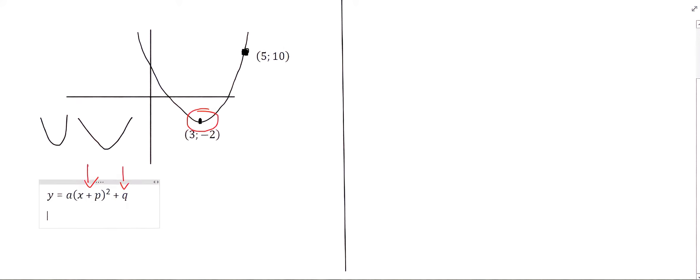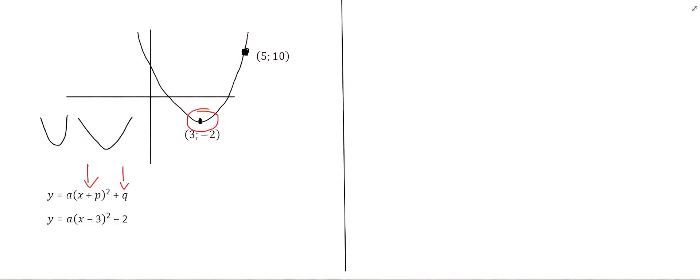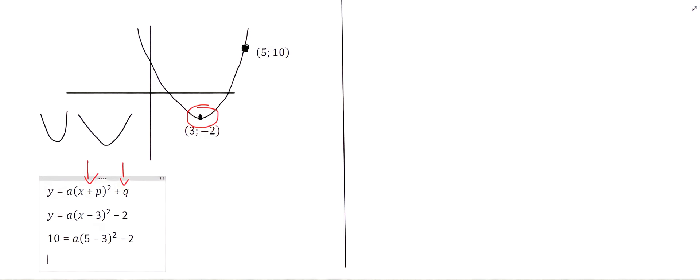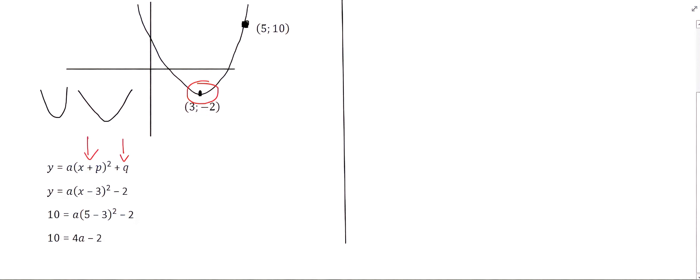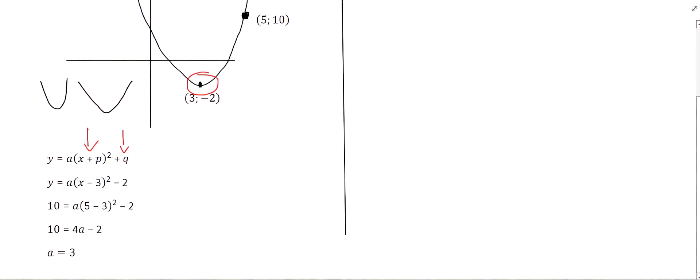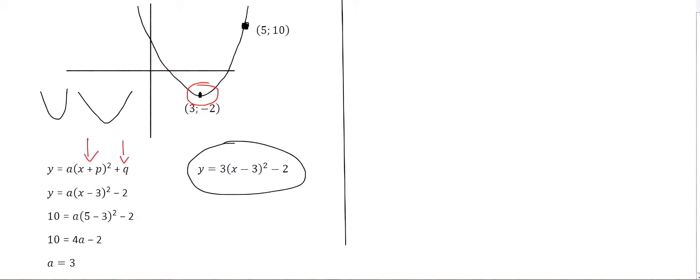We can now find 'a' by substituting any other value visible on the graph. Note that you can't use the 3 and minus 2 again because they have already been used. We substitute the point (5, 10), where 5 goes in place of x and 10 in place of y. Solving for 'a' gives an answer of 3, so the equation of this parabola is y = 3(x - 3)² - 2.